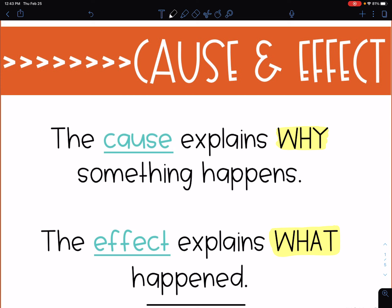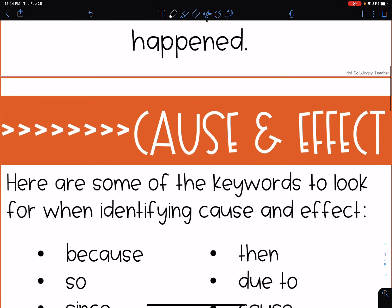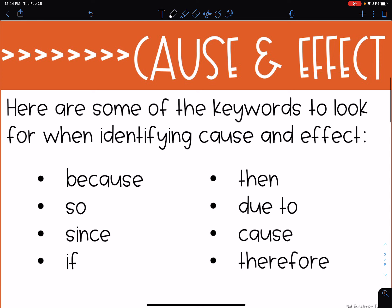Happy Friday, everyone. So today we're still going to be talking about cause and effect when we're reading. Like we learned yesterday, the cause explains why something happens and the effect explains what happened — what took place. Just a review from yesterday: these are some of the key words that we can look for when we're reading to help us identify cause and effect.